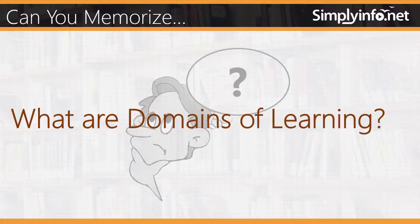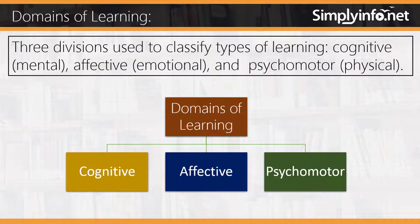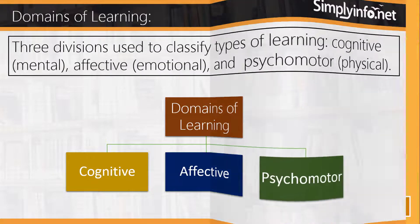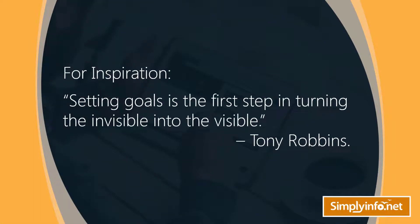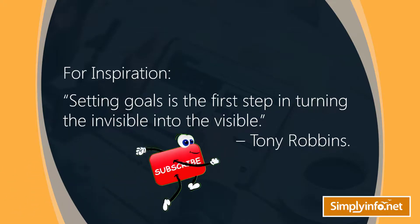Can you memorize what are domains of learning? Three divisions used to classify types of learning: Cognitive (mental), Affective (emotional), and Psychomotor (physical). For inspiration: 'Setting goals is the first step in turning the invisible into the visible.' — Tony Robbins.